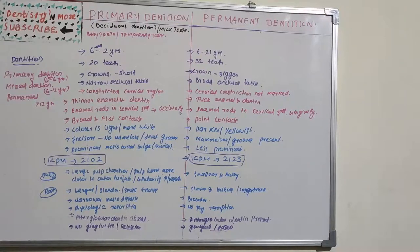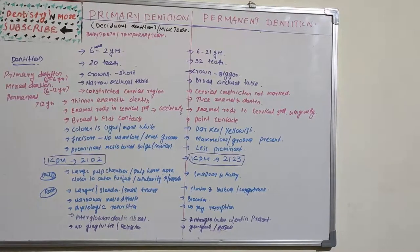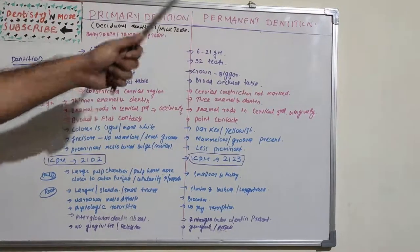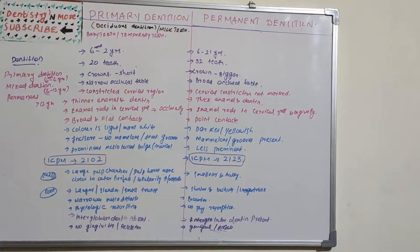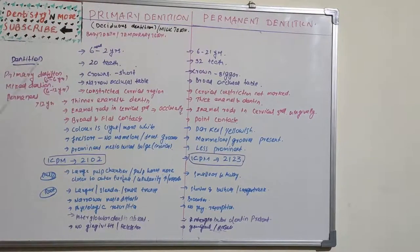Hello everyone, welcome back to another session in Dentistry and More. Today we have a very easy topic: the basic difference between primary dentition and permanent dentition. Primary dentition is also known as deciduous dentition, milk teeth, baby teeth, and temporary teeth. Let's see the difference between these two dentitions.